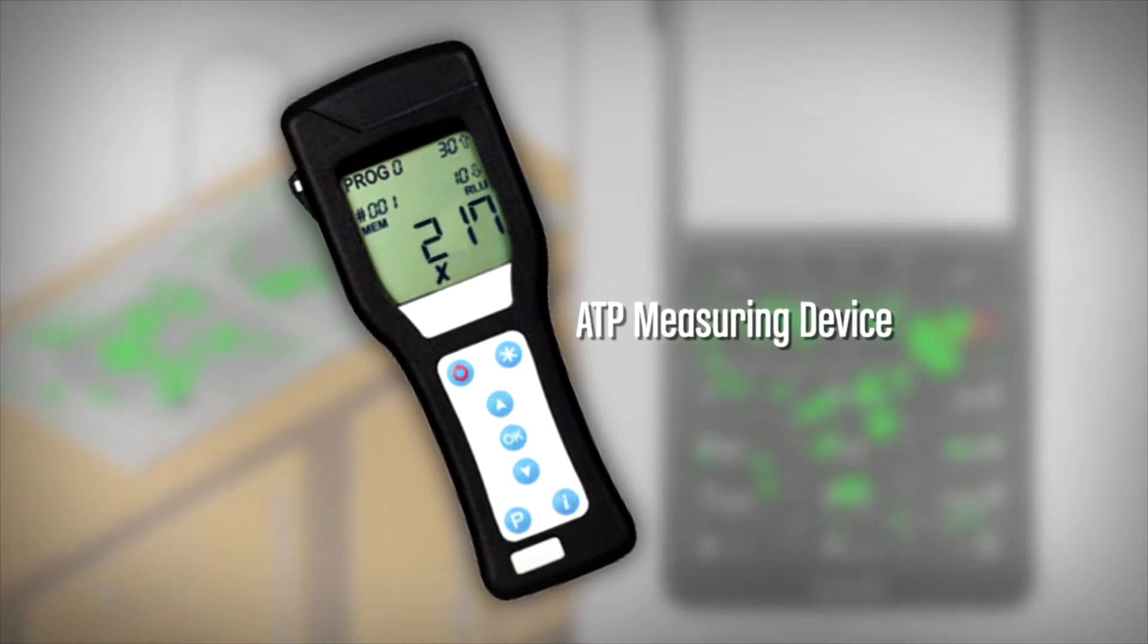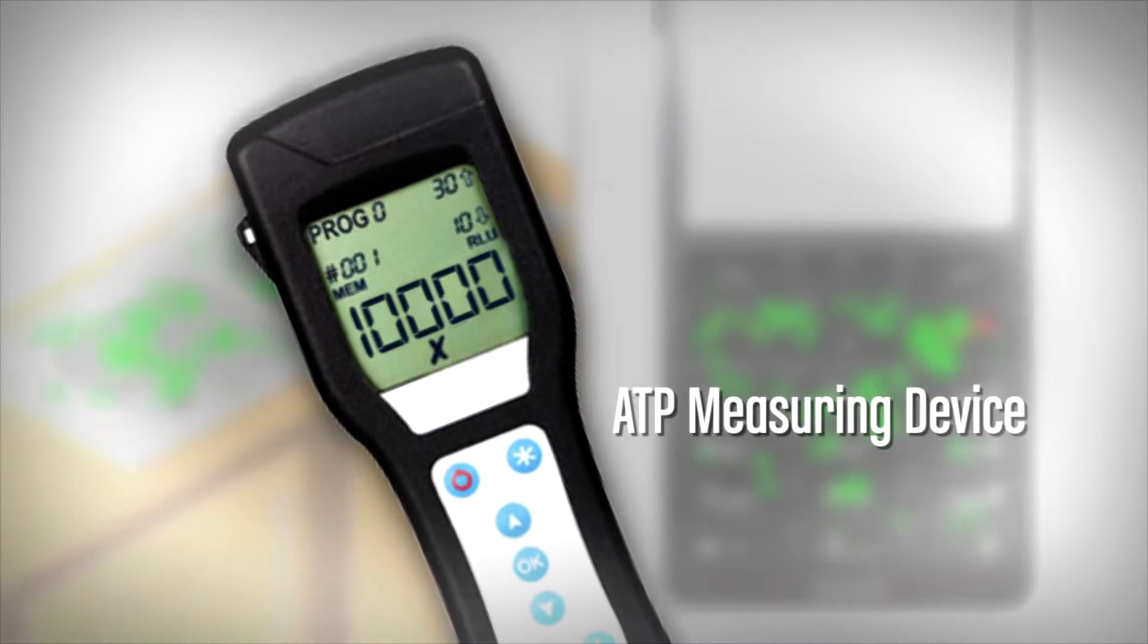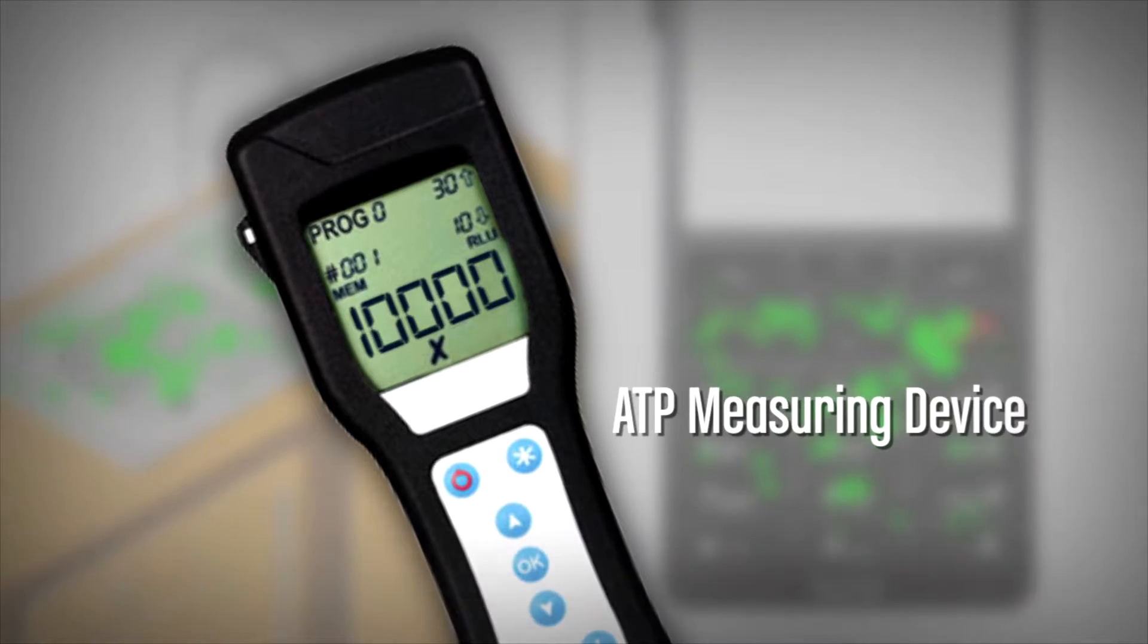The more microbes there are, the more ATP there will be, the brighter the light. If there is no light, the surface is sterile.